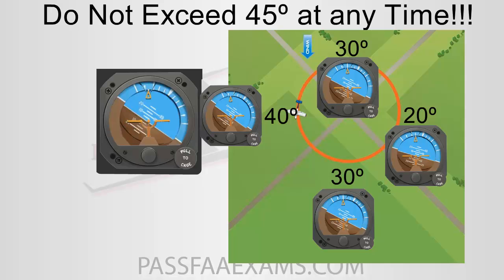Keep dividing your attention between inside and outside the cockpit to avoid busting your plus or minus 100 feet in altitude and your airspeed. You will want to repeat the track at least once, unless the examiner tells you otherwise. After the completion of the second track, exit the maneuver again on the downwind to proceed to your next task.